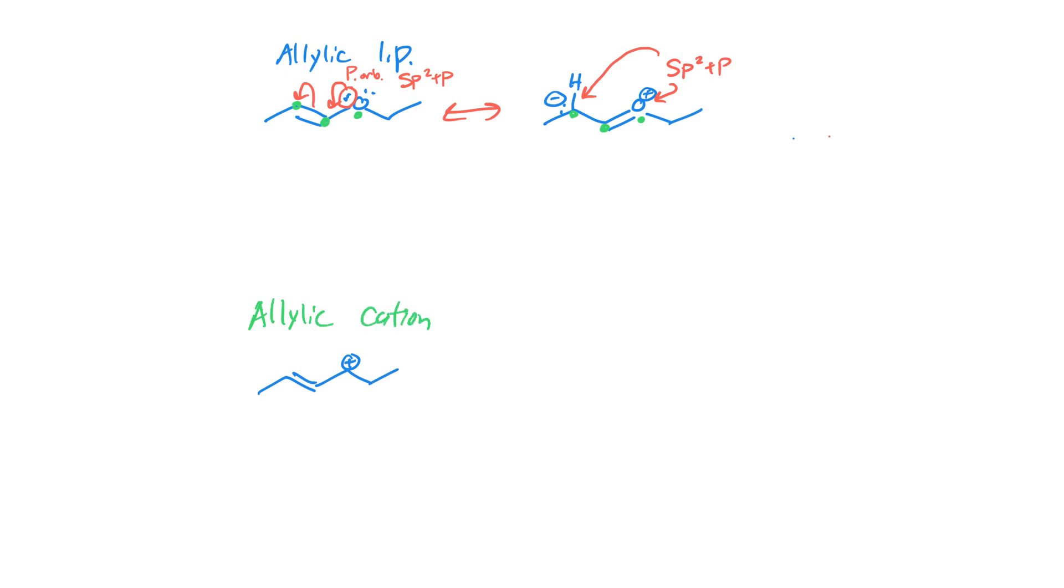It is of course allylic cation, it requires one arrow, and it gives us a resonance structure that looks like that. And of course, this is not too difficult, all three of these atoms are sp2 plus p.